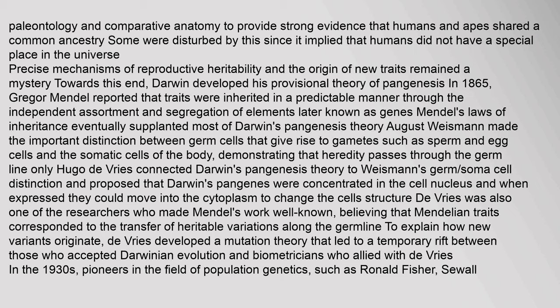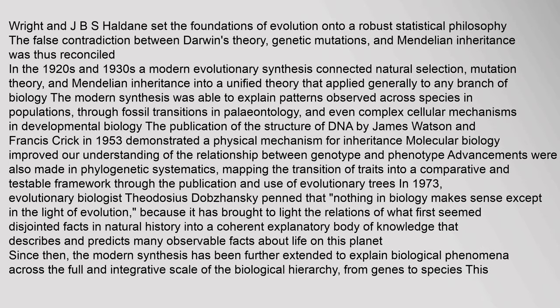Hugo De Vries connected Darwin's pangenesis theory to Weismann's germ-soma cell distinction, and proposed that Darwin's pangenes were concentrated in the cell nucleus and when expressed could move into the cytoplasm to change the cell's structure. De Vries was also one of the researchers who made Mendel's work well known. He developed a mutation theory that led to a temporary rift between those who accepted Darwinian evolution and biometricians allied with De Vries. In the 1930s, pioneers in population genetics such as Ronald Fisher, Sewall Wright, and J.B.S. Haldane set the foundations of evolution onto a robust statistical philosophy.